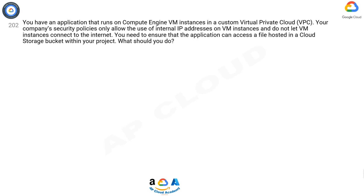Question 202: You have an application that runs on Compute Engine VM instances in a custom Virtual Private Cloud (VPC). Your company's security policies only allow the use of internal IP addresses on VM instances and do not let VM instances connect to the internet. You need to ensure that the application can access a file hosted in a Cloud Storage bucket within your project.